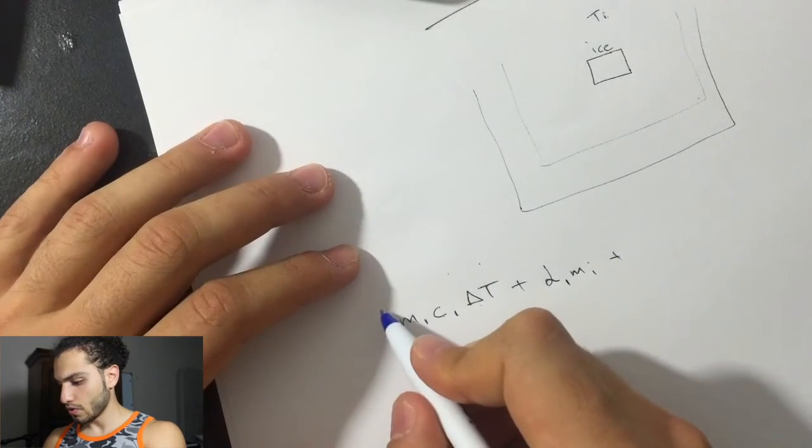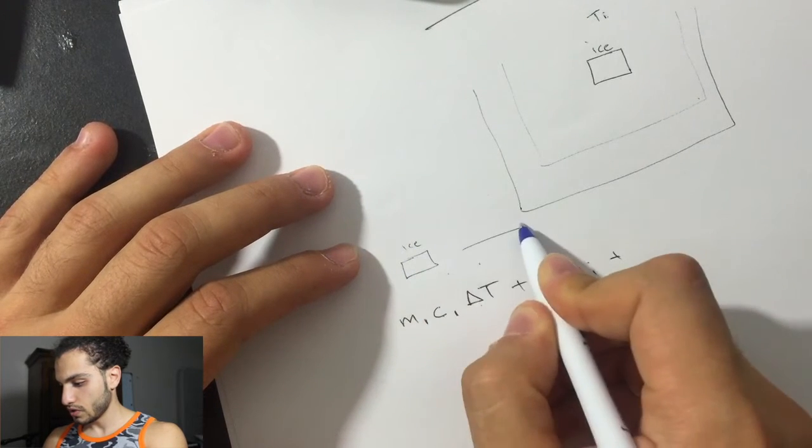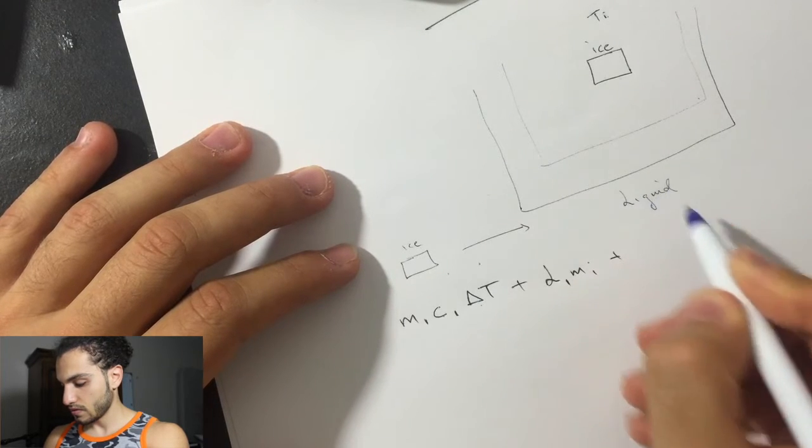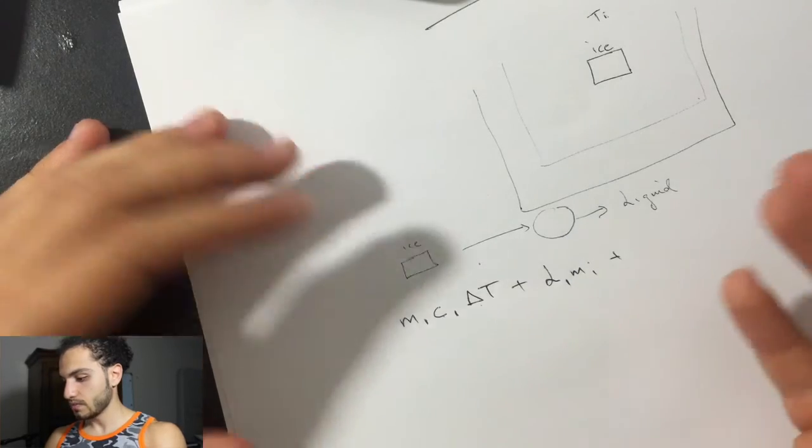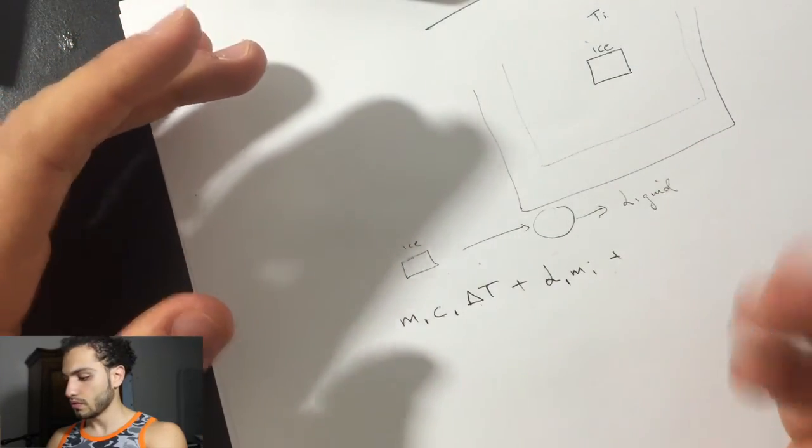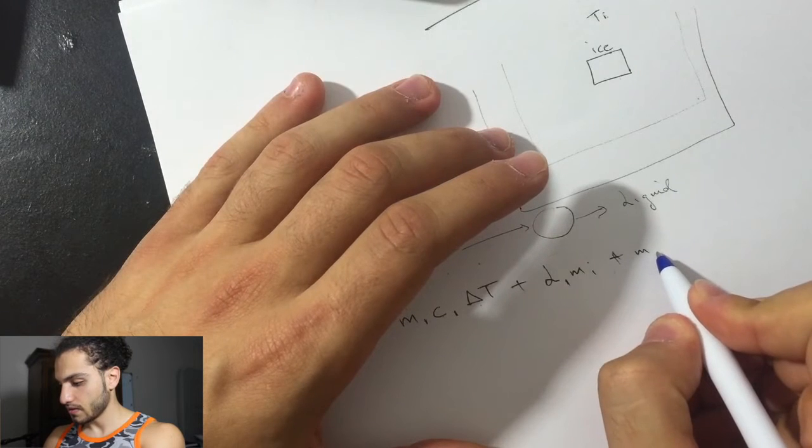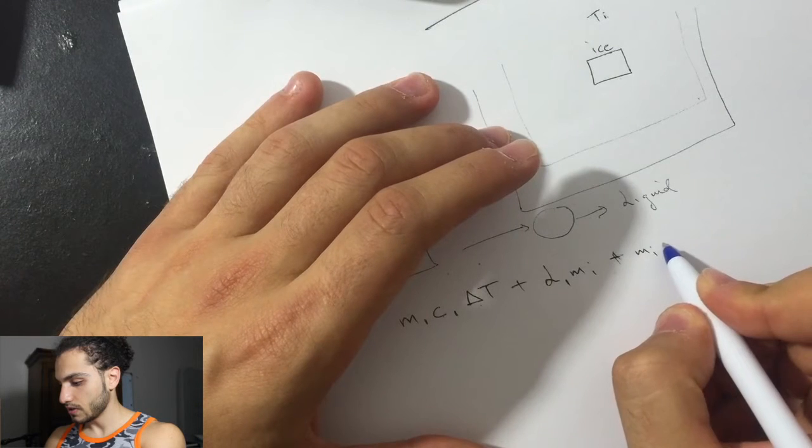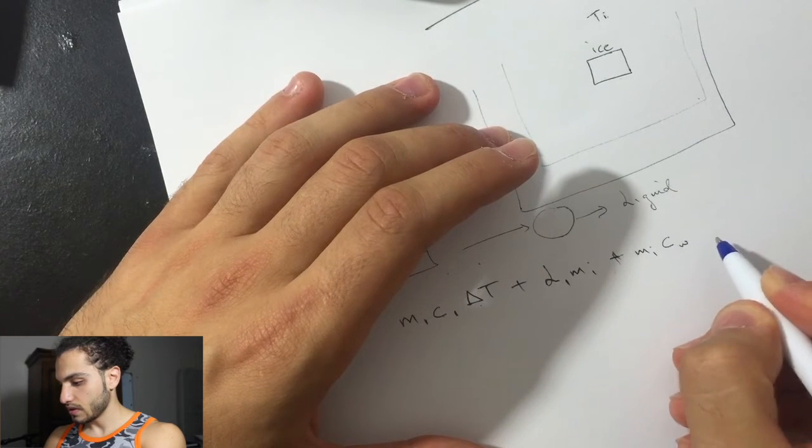Okay, so this one is to go from ice to liquid. And in between here, it's going to change from ice to liquid. This is the heat that's required to change it from ice to liquid. So, the liquid, we're going to do the same thing. Mass of the water, which is the same as the ice, times specific heat of the water, times delta T.